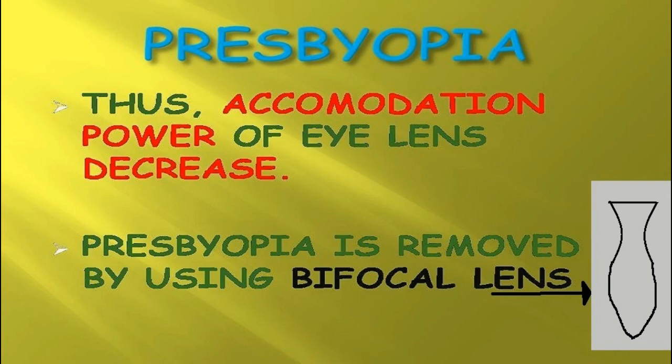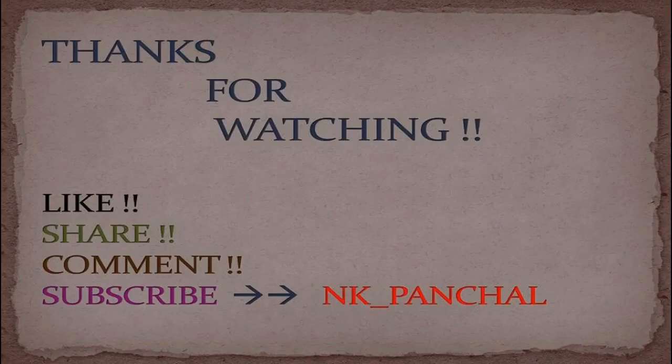Presbyopia can be corrected by using a bifocal lens. A bifocal lens is a type of lens in which both concave and convex lenses are used. In general, a bifocal lens contains a concave lens at the upper part and a convex lens at the lower part.